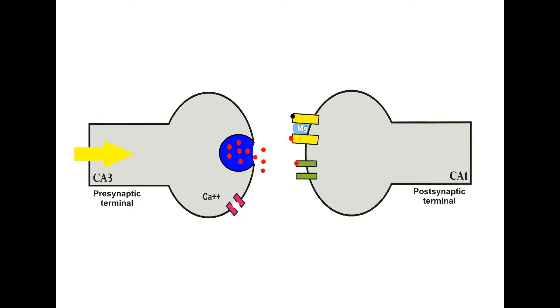Binding of glutamate to AMPA receptors activates them. Sodium influx occurs via AMPA receptors and the postsynaptic membrane becomes depolarized.